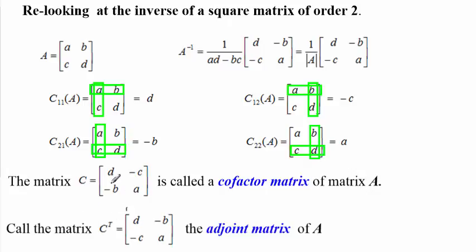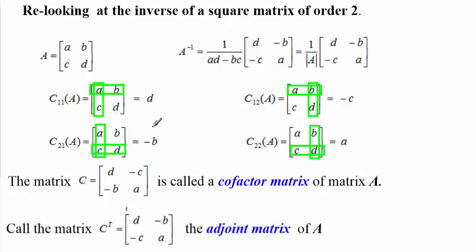Note that if we take the transpose of the cofactor matrix C, where rows become columns, we get exactly the matrix we need. We call that matrix the adjoint of A. So, if we're given a matrix A, the inverse will be 1 over the determinant multiplied by the adjoint of A, which we can get by following the process we've just described. Let's now take an example of a matrix we've looked at before and follow this process to calculate the inverse.